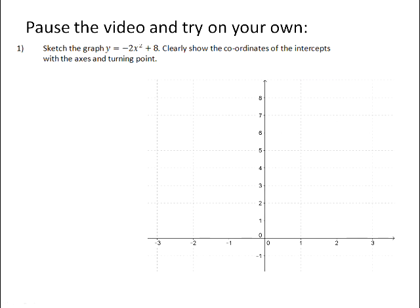Number one: sketch the graph y equals negative 2x squared plus 8. Clearly show the coordinates of the intercepts with the axes and the turning point.